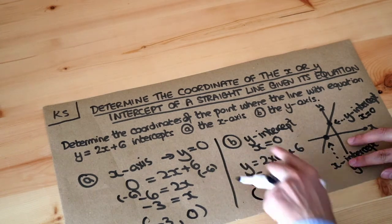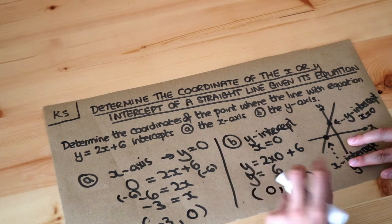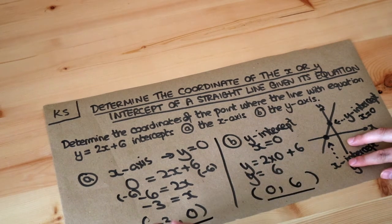So let's turn that into a coordinate. The x value we said was zero so x is zero and the y value is six and that's the final answer.